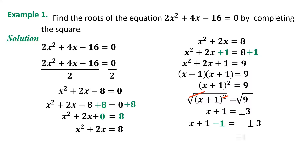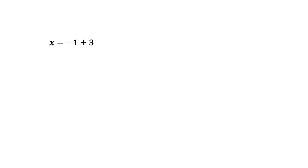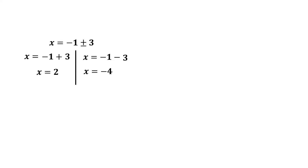The inverse of +1 is -1, so we add -1 to both sides. We have x + 1 - 1 = 0, so x = -1 ± 3. This separates into two equations: x = -1 + 3 and x = -1 - 3. For the first equation, x = 2, and for the second, x = -4.